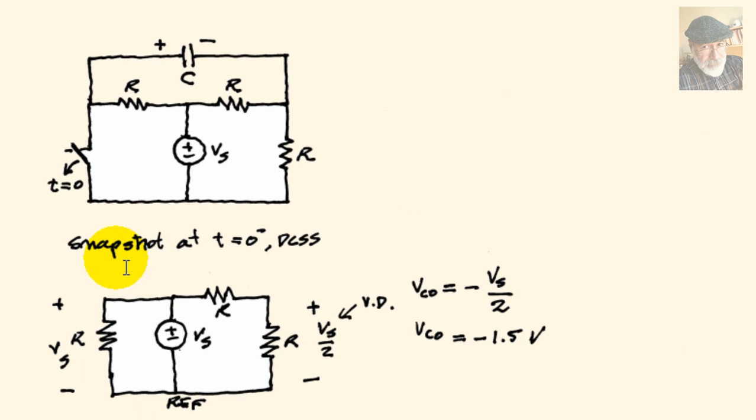For that, we will take a snapshot of the circuit right before we open the switch at t equals zero minus. Why? Because at zero minus, because the circuit has been like that for a long time, the circuit must be in steady state. And because the only one source is a DC source, then the circuit is in DC steady state.